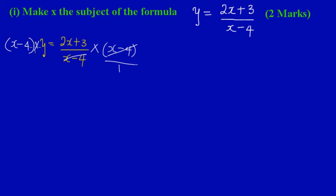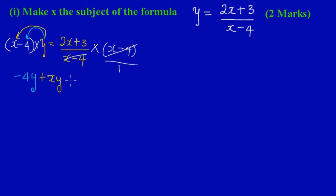What I'm left with is (x - 4) multiplying y on the left side, so we're going to remove the brackets. y times negative 4 gives us negative 4y, and y times positive x gives us positive xy. And since (x - 4) cancelled on the right, we're simply left with 2x + 3.